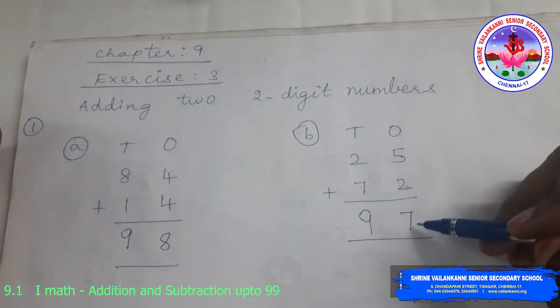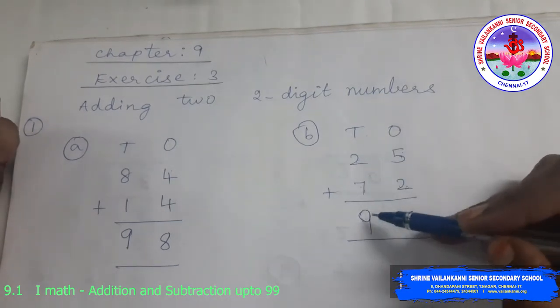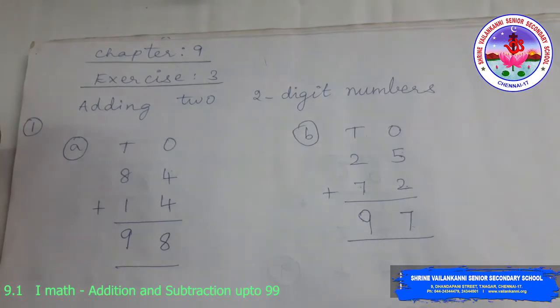So you write, make sure you write the numbers below the place correctly. Even the answer should be correct. You can't write 9 here. If you make it a practice now, when you grow up, it will be very easy.